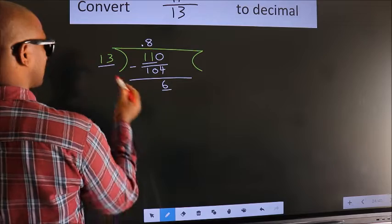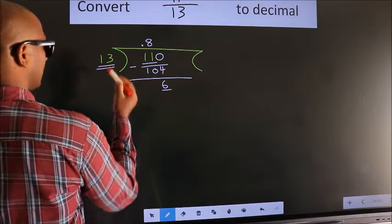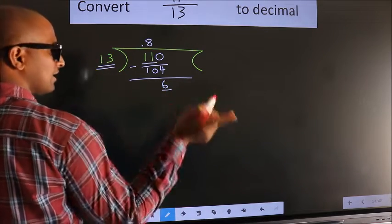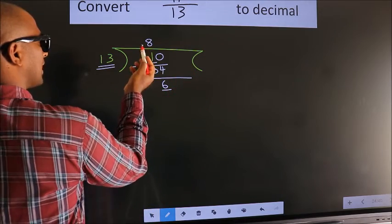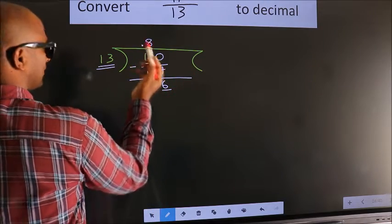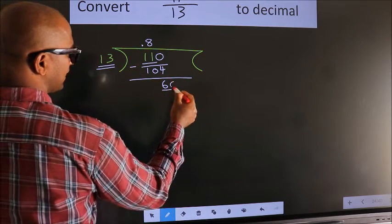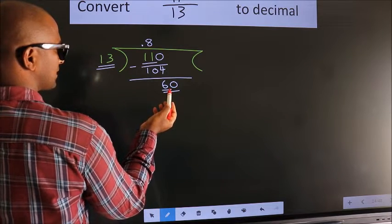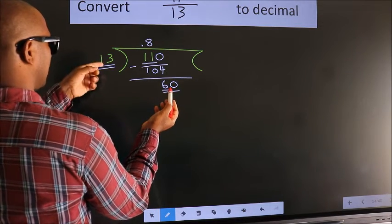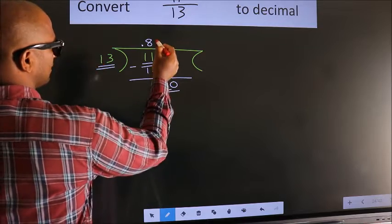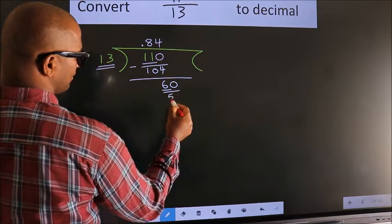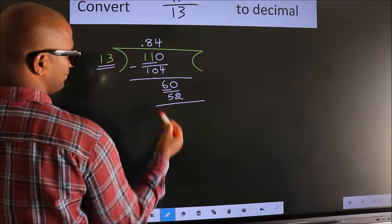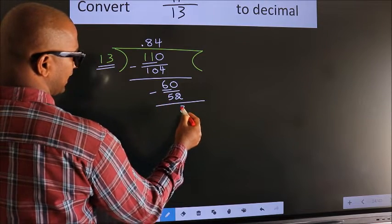Here we have 6 and here 13. 6 is smaller than 13, and we already have the decimal, so we can directly take 0 — so 60. A number close to 60 in the 13 table is 13 fours, 52. Now we subtract and we get 8.